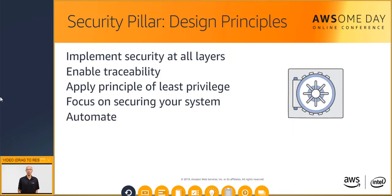When architecting, it is important to consider specific design principles to help you strengthen your security. Apply security at all layers — you want to have multiple layers of defense by securing your infrastructure everywhere and at every layer. In a physical data center, security is typically considered only at the perimeter. With AWS, you can implement security at the perimeter and within and between your resources, ensuring individual environment components are secured from each other as well.